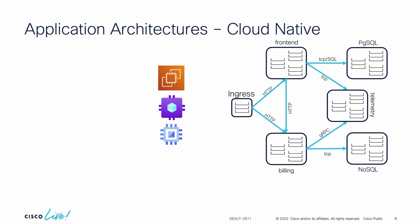They're broken up into smaller, fairly independent components called microservices. What we might traditionally have deployed as a three-tier app with a web front-end, an application server, and a database server now could look very different — where the front-end is its own entity, telemetry like logs and click metrics run in a different service, billing is yet another independent microservice, and each service needs its own source of data, so you can have multiple different types of databases running for the same app.